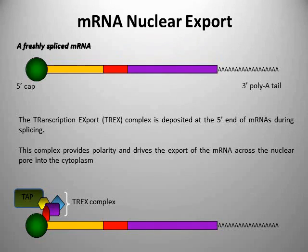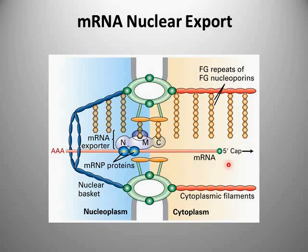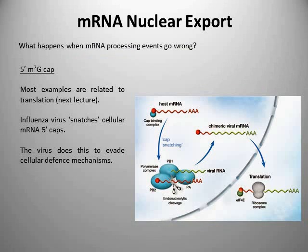What happens once TREX is recruited to the 5' end of the mRNA is that the mRNA moves towards a nuclear pore complex where it interacts with components within the nuclear pore complex called FG repeats or FG nuclear porins, in such a way that it's ratcheted through the nuclear pore. The proteins known to interact with these FG repeats include the TREX proteins at the 5' end of the mRNA. That's how we get mRNA out into the cytoplasm. Translation and degradation will be discussed more in the next lecture.